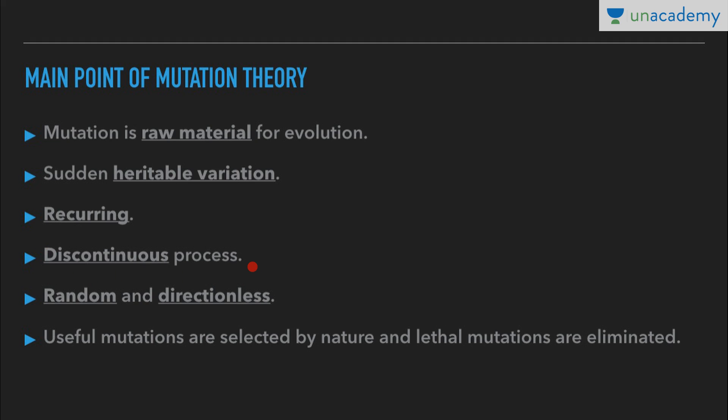Mutation is a discontinuous process — it occurs suddenly with no continuity. There is no probability of when it will occur in a particular generation or ratio. There is no certainty when the mutation will occur and when not.